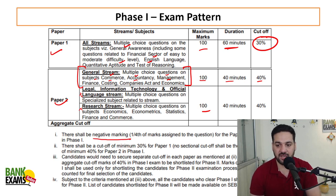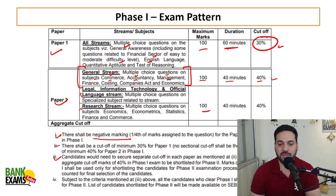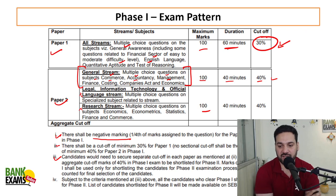One-fourth is the negative marking. The cutoff is 30% in paper one and 40% in paper two. Candidates need to secure separate cutoffs for paper one and paper two, and also an aggregate of 40%.